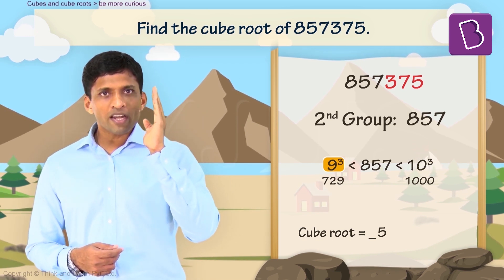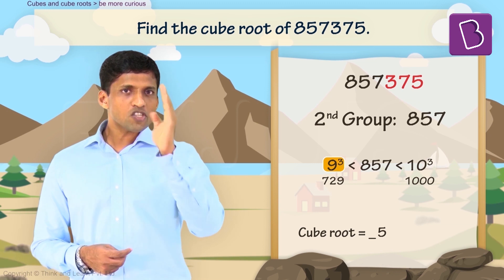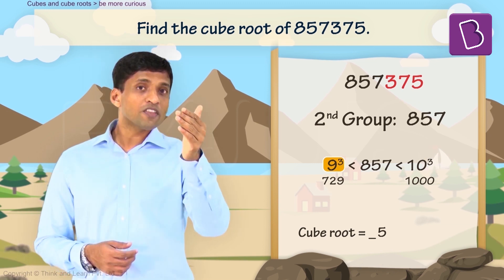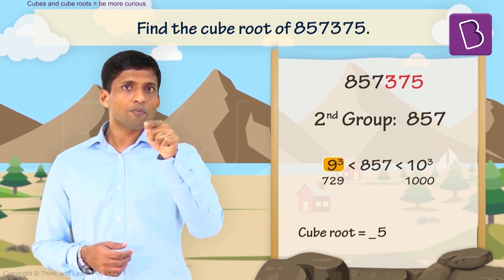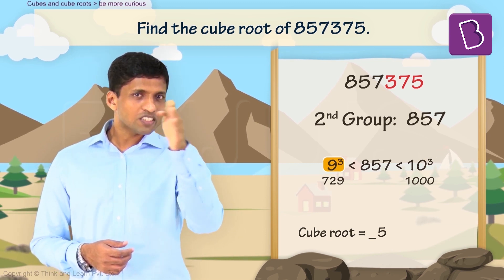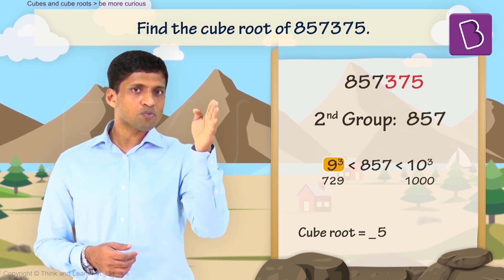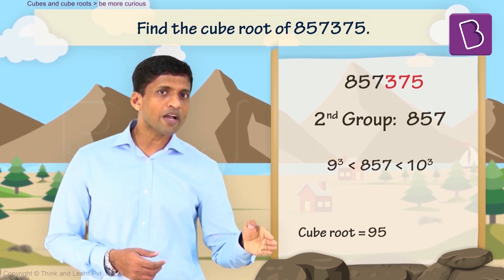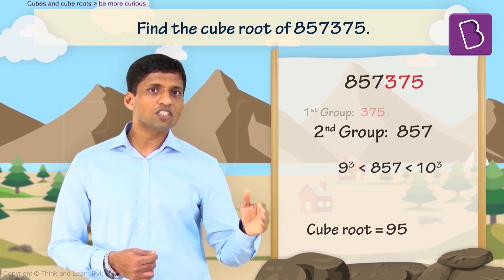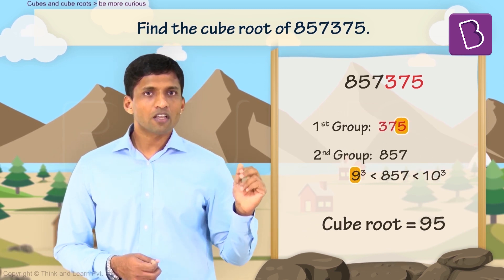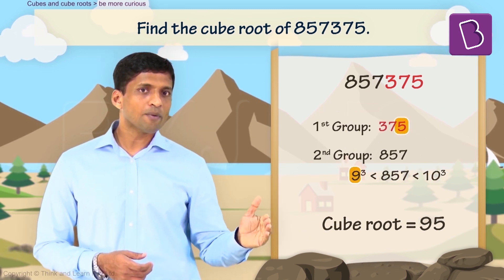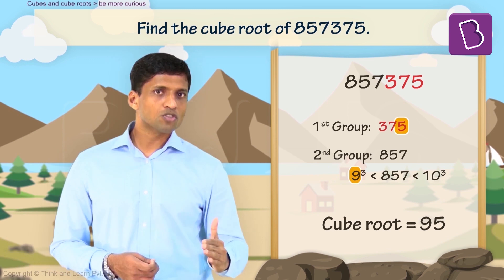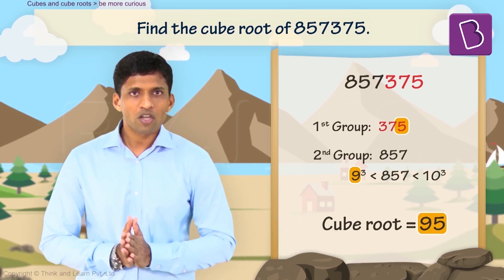Since 9³ is just below 857, this 9 directly becomes the tens digit of the cube root. So 9 goes in the tens place, giving us 95 as the cube root.